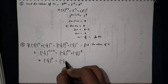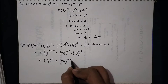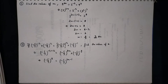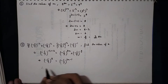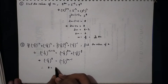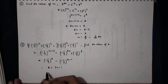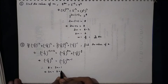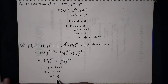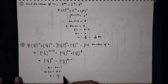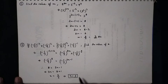This becomes (−5/7)^8 = (−5/7)^(3x − 1). Since the bases are the same, we equate the powers: 8 = 3x − 1, so 3x = 9, therefore x = 9/3 = 3. The value of x is 3.